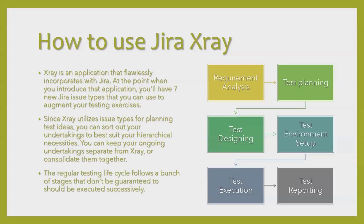For test planning, we can plan everything in detail — starting with analysis of the application, getting documentation, and including team members in the planning phase. The regular testing life cycle follows a set of stages that don't necessarily need to be executed sequentially. We can design and execute test cases both manually and automatically. We can also set up test environments — for example, creating three different instances for UAT, QA, and development — and create, manage, and execute all test cases according to our requirements.